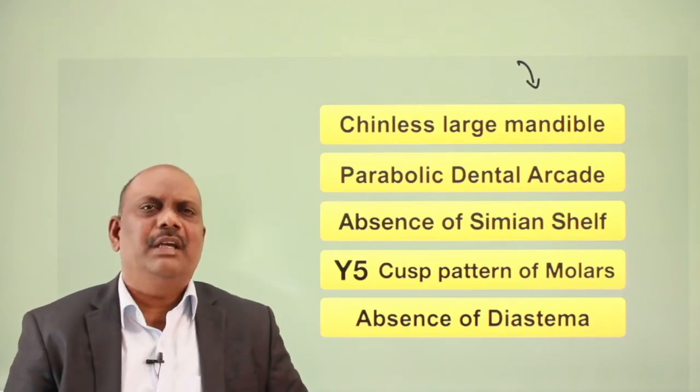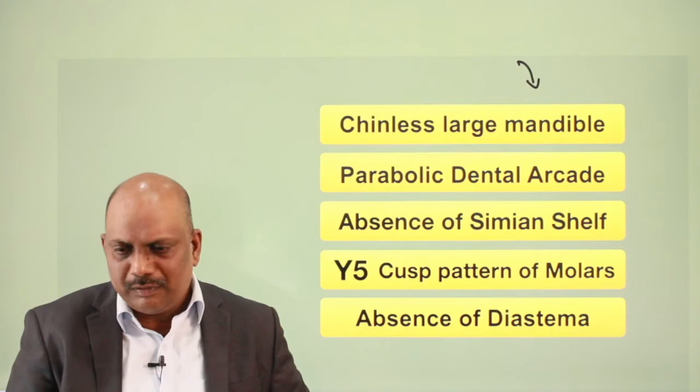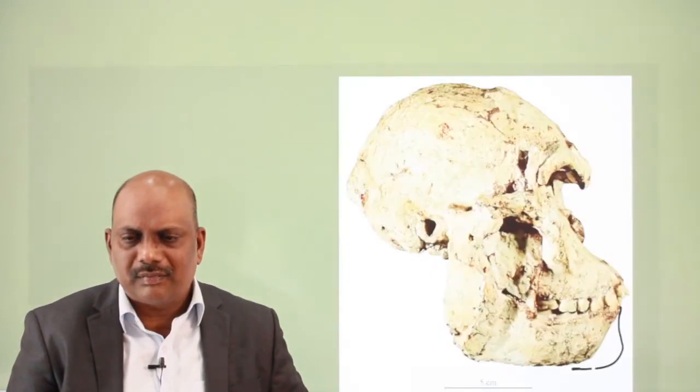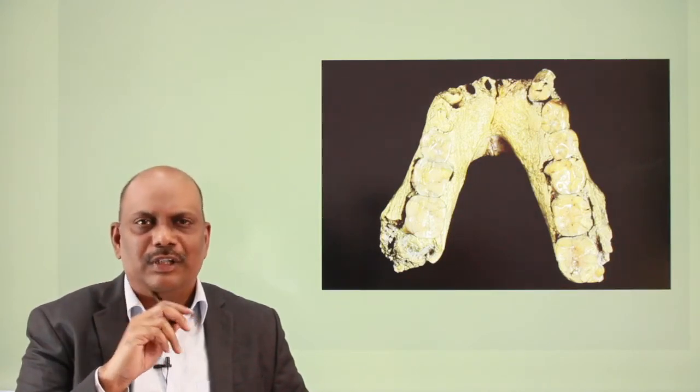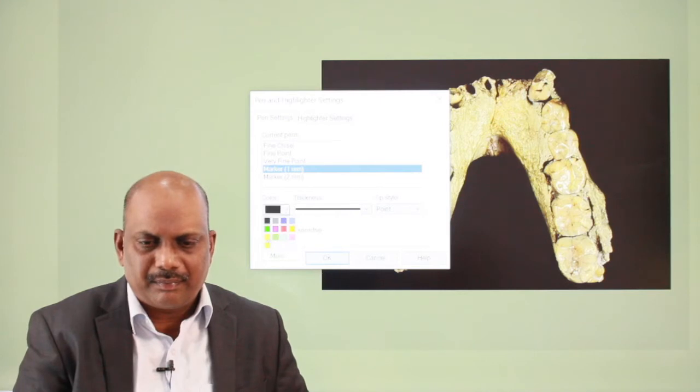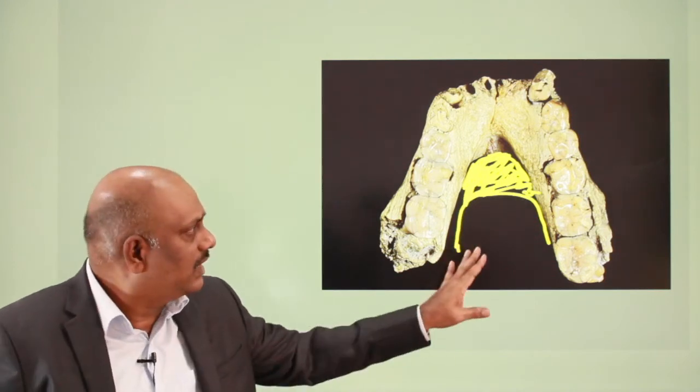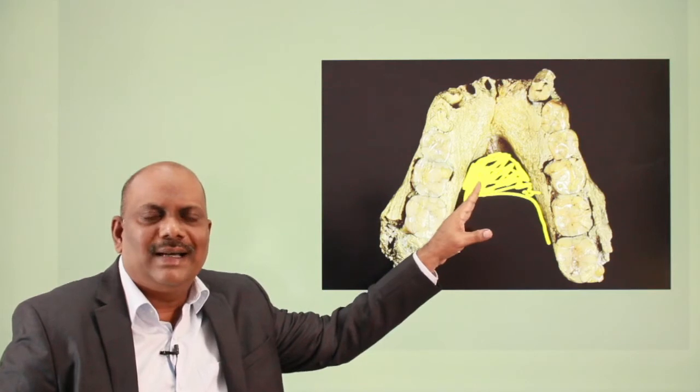Next, absence of simian shelf. A simian shelf refers to a bone which developed in the lower jaw that made it look like a shelf. This is a primitive character. In Australopithecus, the simian shelf is absent, and this is one advanced character of Australopithecus.